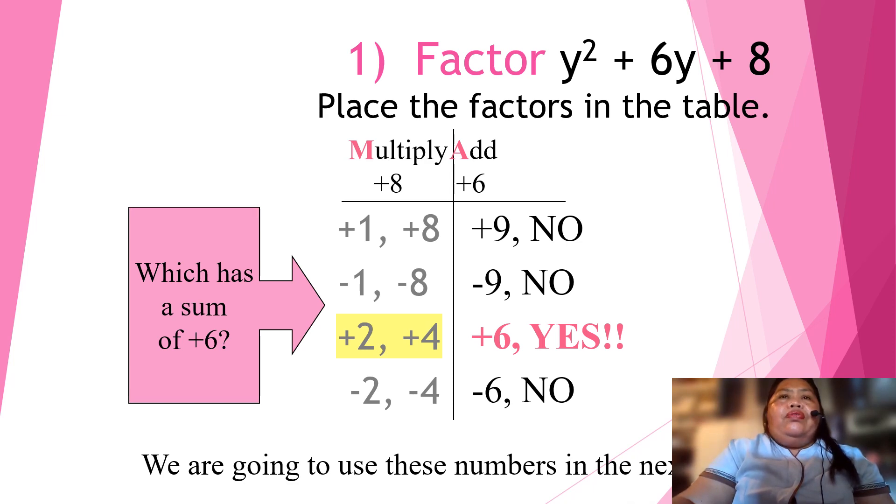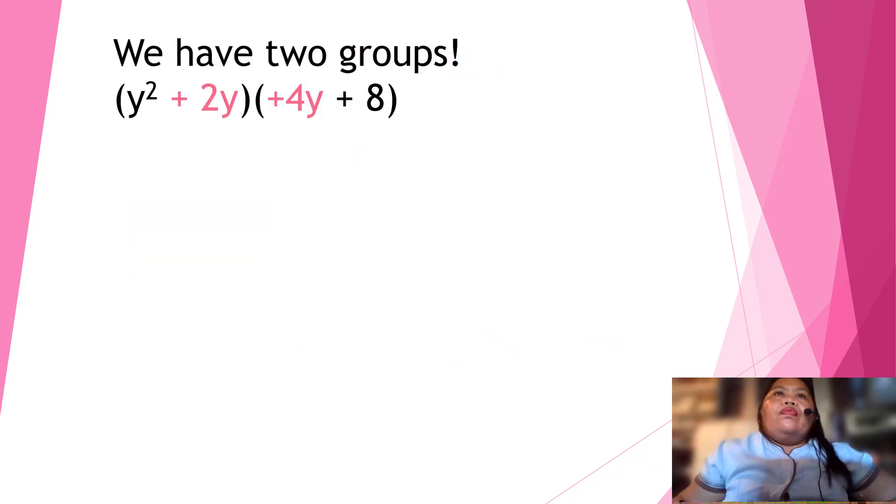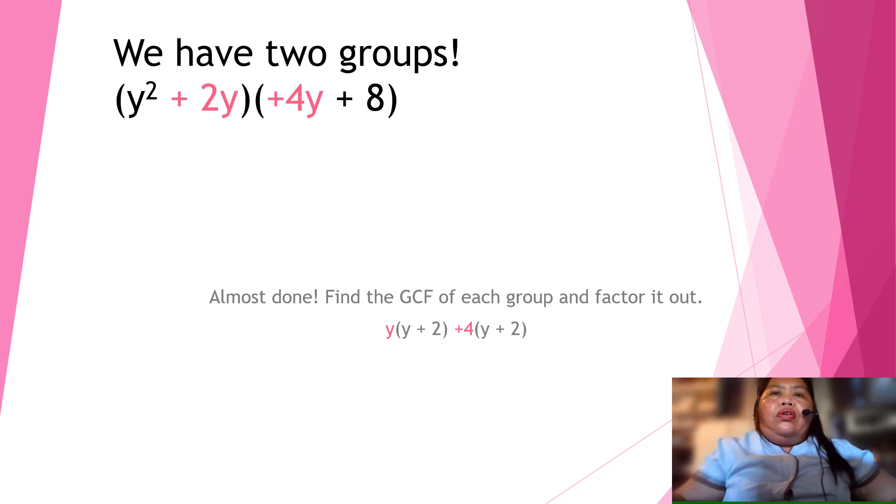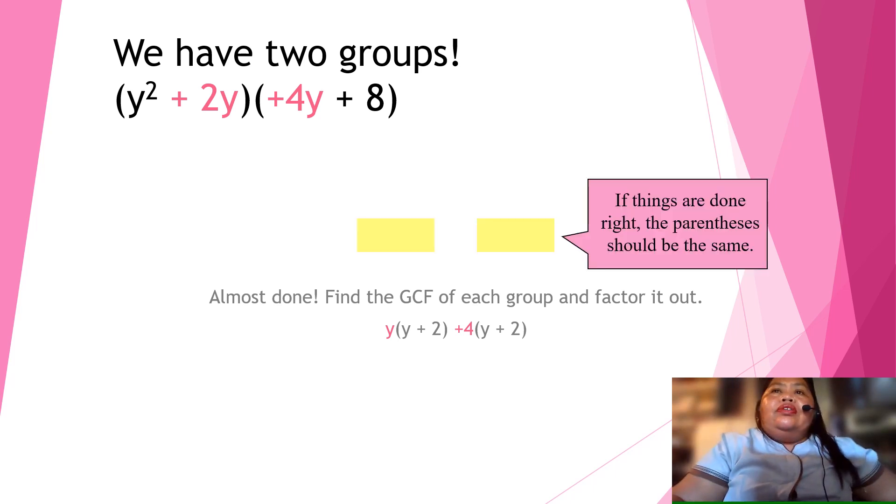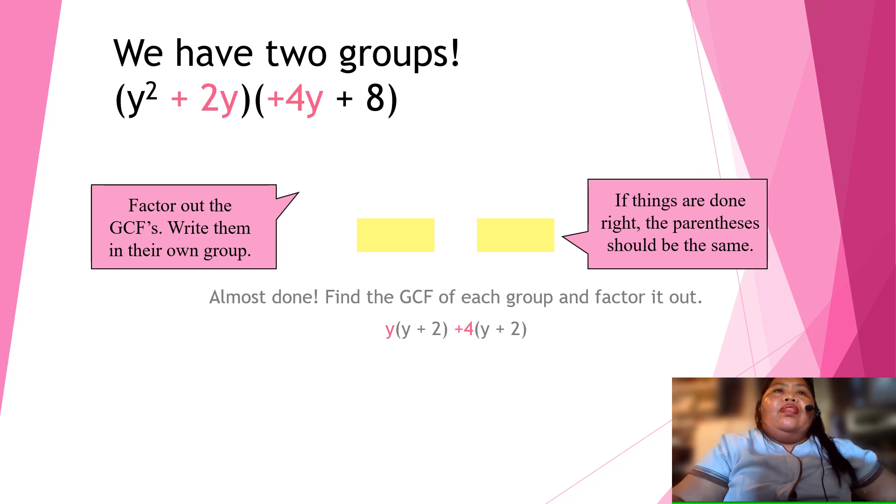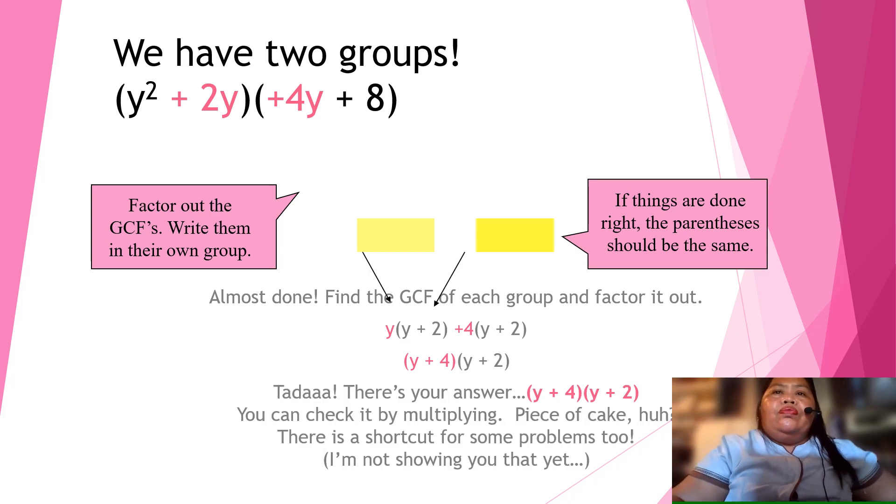Now, what are we going to do next? We have two groups now. And that is y squared plus 2y plus 4y plus 8. So, almost done. Find the GCF of the group. So, the GCF is y and 4. If things are done right, the parentheses should be the same. Let's factor the group. So, we have y plus 4 and y plus 2. So, your answer is (y plus 4)(y plus 2). So, you can check it by multiplying. Piece of cake. It's a shortcut for some problems too. I'm not showing you that yet.